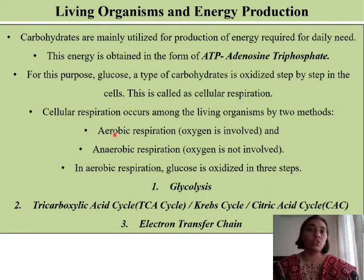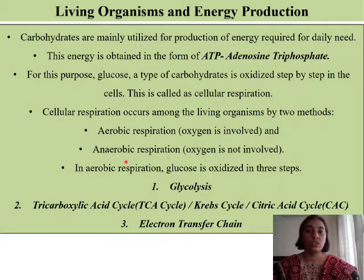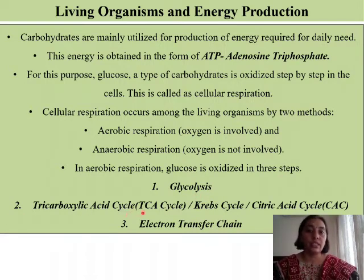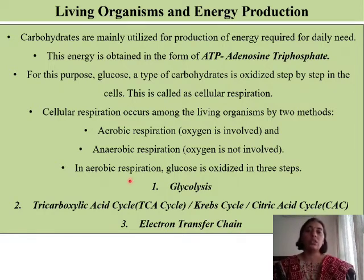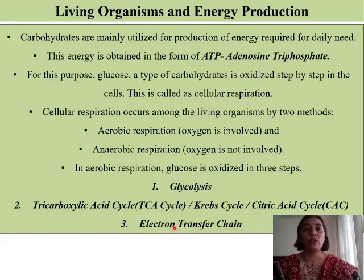In aerobic respiration, oxygen is required for production of energy, whereas in anaerobic respiration, energy is produced in the absence of oxygen. In aerobic respiration, glucose is oxidized in three steps: glycolysis, the tricarboxylic acid cycle — also called the TCA cycle — and the third step is the electron transfer chain. We are going to study each step one by one to understand how energy is released.